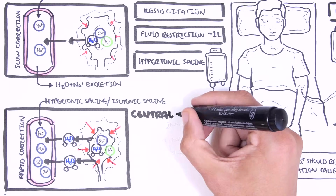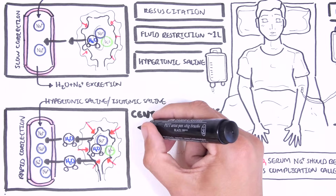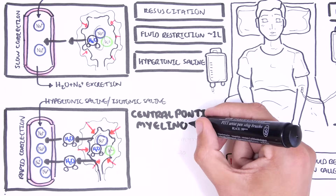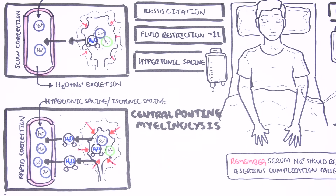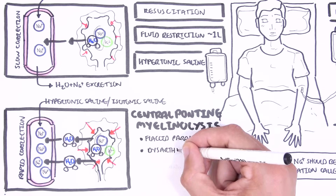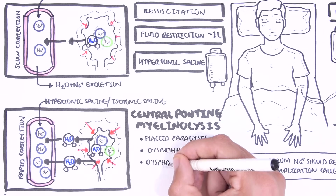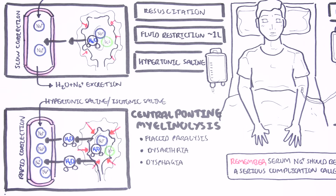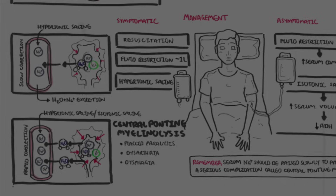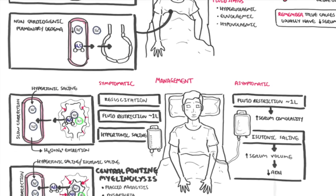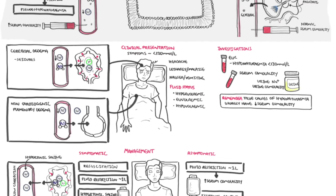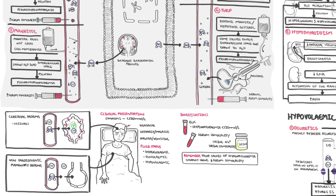Central pontine myelinolysis is characterized by flaccid paralysis, dysarthria, and dysphagia. This disorder is associated with significant morbidity and mortality. That concludes the video on hyponatremia.